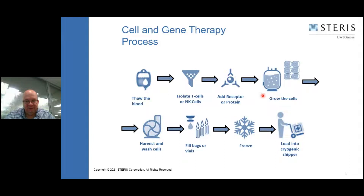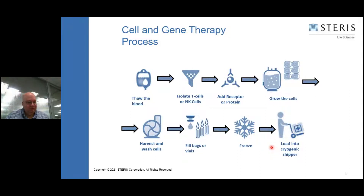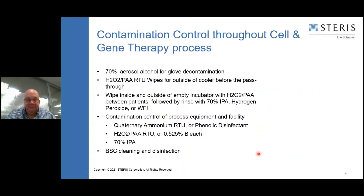Another application of disinfectants comes when you put cells in an incubator for growing up. That incubator needs to be periodically decontaminated using a sporicidal wipe or sporicide spray to ensure no bacteria or mold could contaminate the system. The cells are then harvested, washed, and filled into bags and vials for storage at minus 80 degrees or below for cryo-freezing. Those cryo-frozen cells are shipped to either one facility for a single patient or multiple facilities depending on whether it's an autologous or allogeneic cell and gene therapy process.